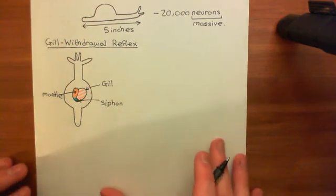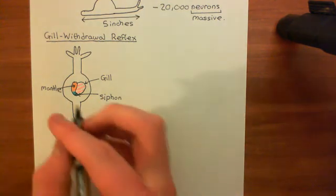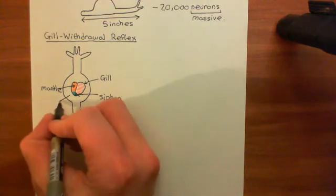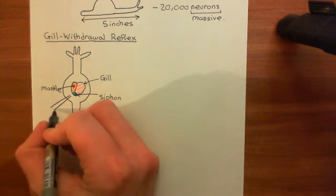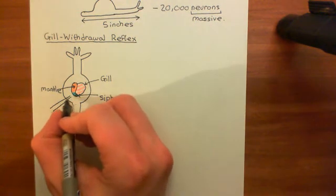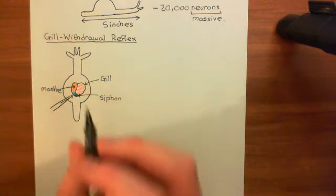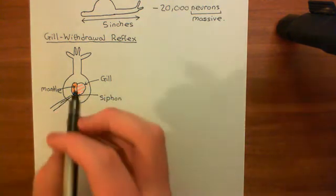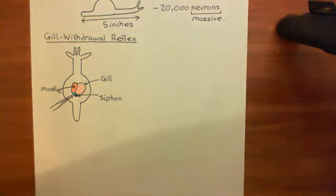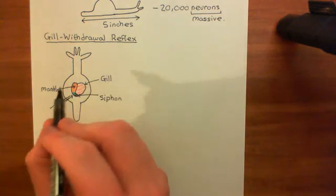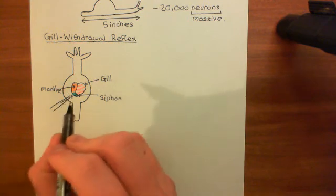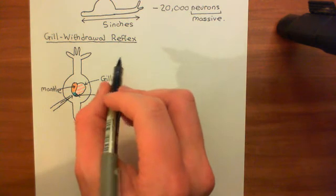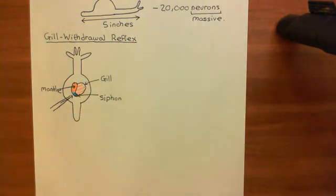The gill-withdrawal reflex refers to the fact that if you bring in a little pipette and spray water onto the siphon, the sea slug's response is to contract the gill and put it over the siphon. That's called the gill-withdrawal reflex — the protection of the siphon by the gill.